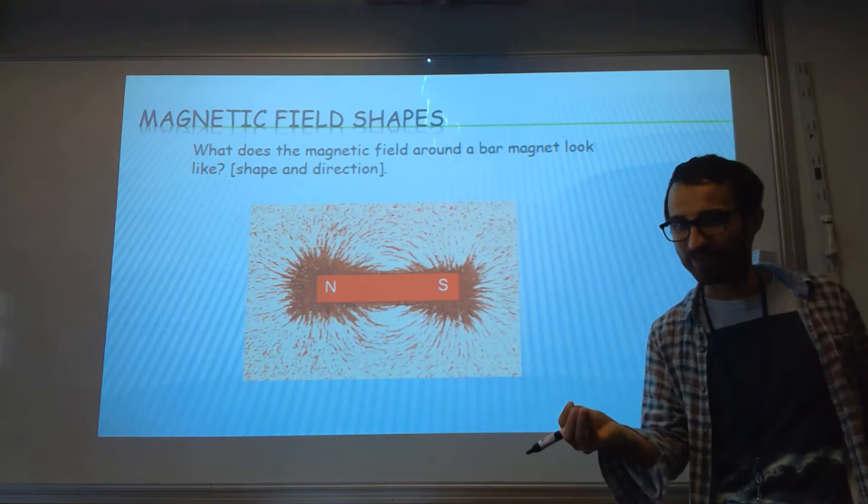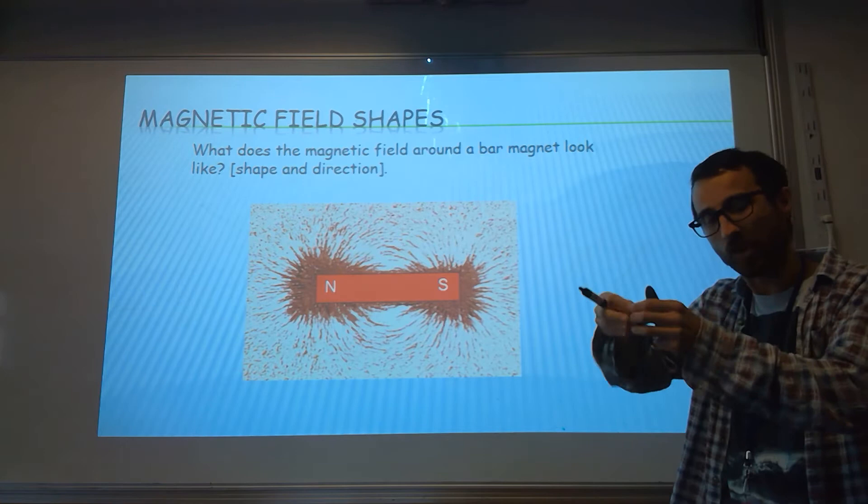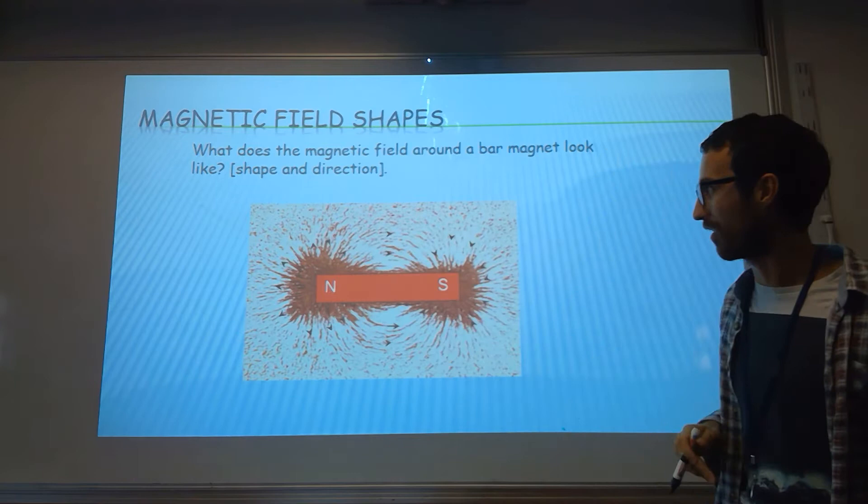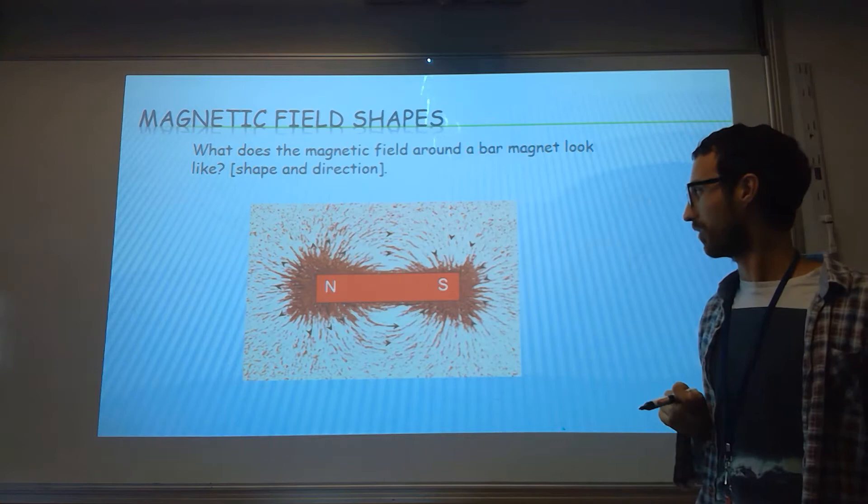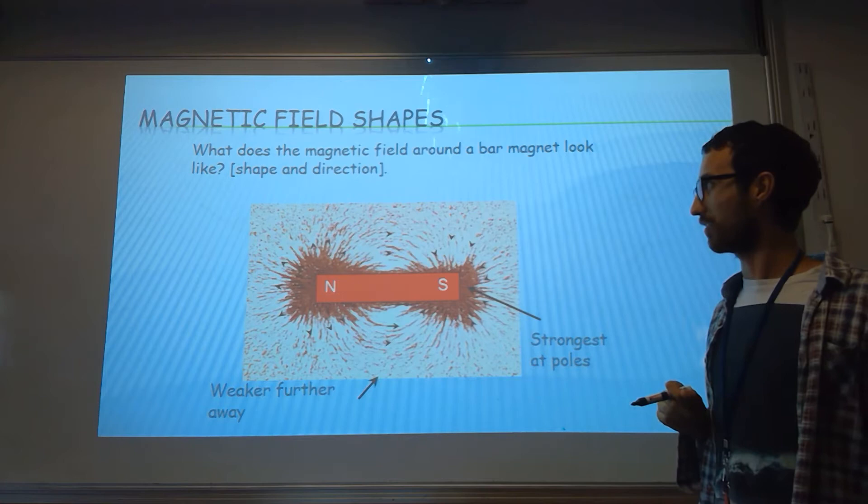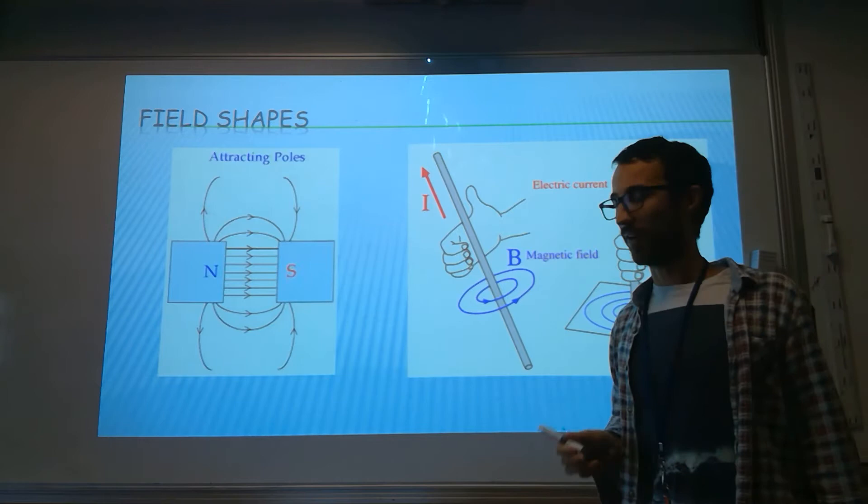How do we know the shape? Well, we can use something called iron filings. Imagine a bit of parmesan but it's made of iron. You sprinkle that on, tap the piece of paper, and because the iron is magnetic it slowly lines up because it experiences a force with the magnetic field lines. You can't tell the direction from this - you need a compass if you're going to do that. We know it's strongest at the pole because there's the most field lines there and weakest further out.